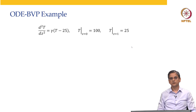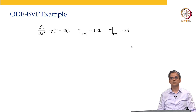Today I am going to talk about some extensions. For example, if the right hand side is a non-linear function, what do you do? The second extension is if the boundary condition is not a Dirichlet boundary condition but is a Neumann boundary condition or a mixed boundary condition, then what do you do? I will talk about this in the next 10 minutes or so.